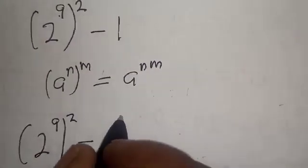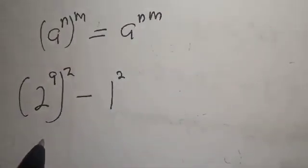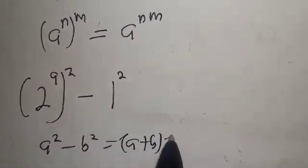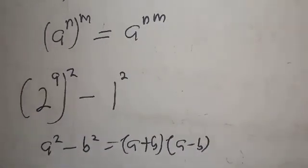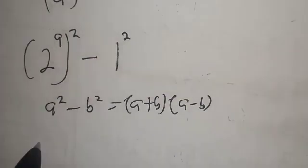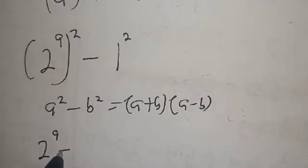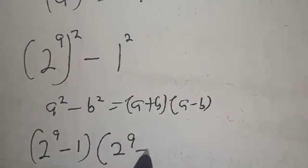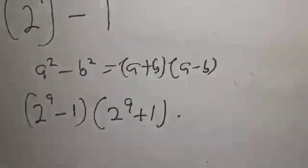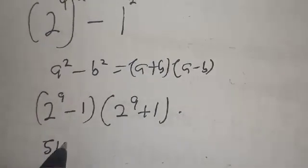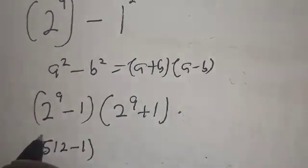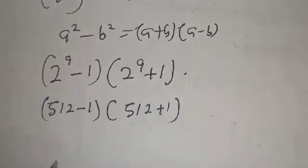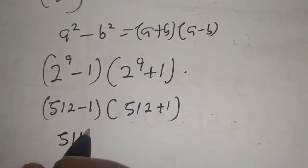Now 2 raised to power 9 squared minus this 1 is the same thing as 1 squared. Now this is difference of two squares: a squared minus b squared is equal to a plus b multiplied by a minus b. Now 2 raised to power 9 minus 1 multiply by 2 raised to power 9 plus 1. 2 raised to power 9 is 512.